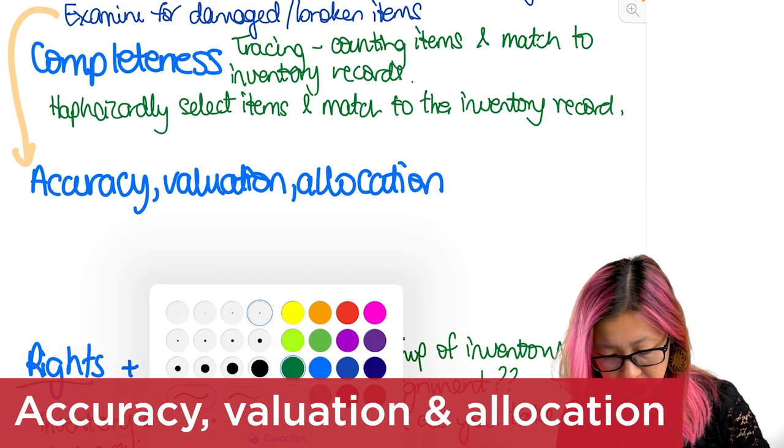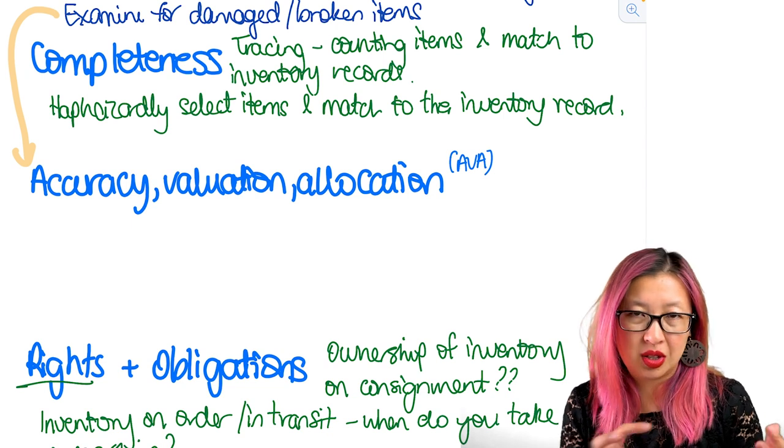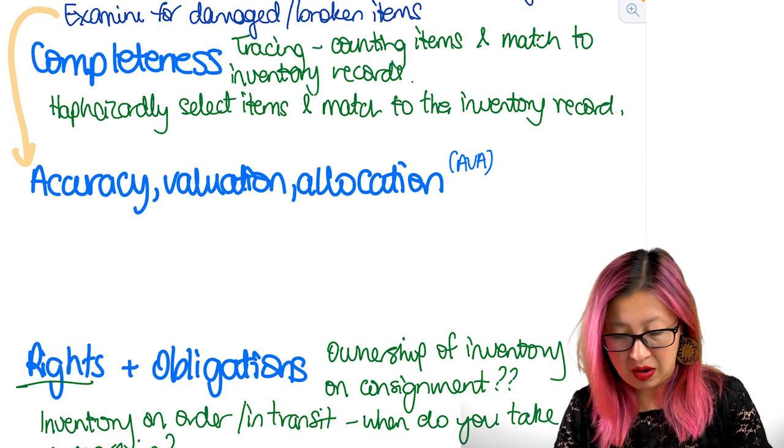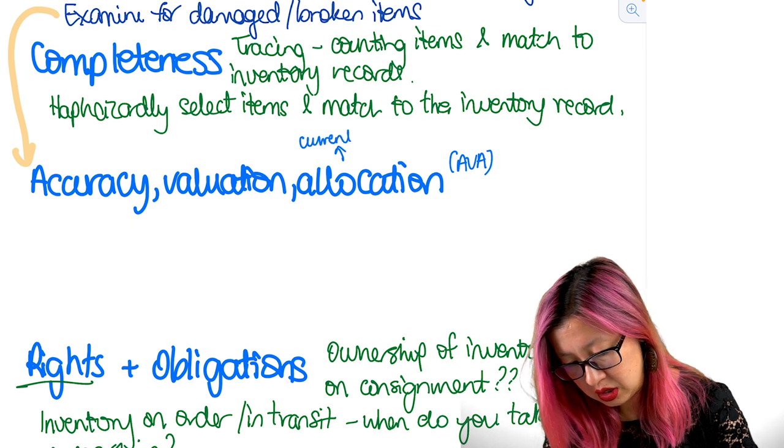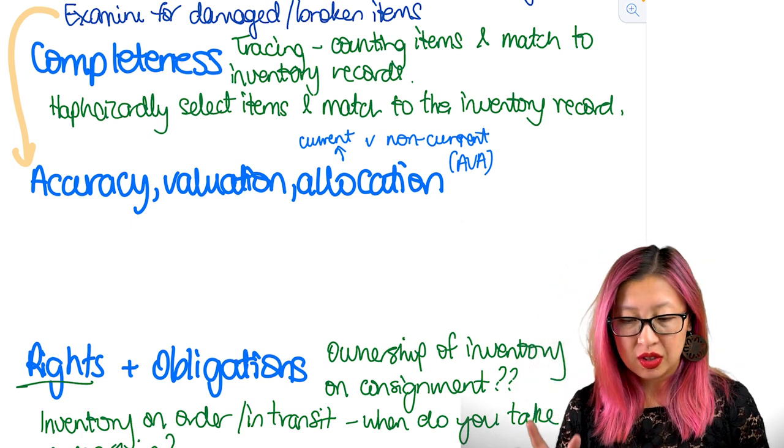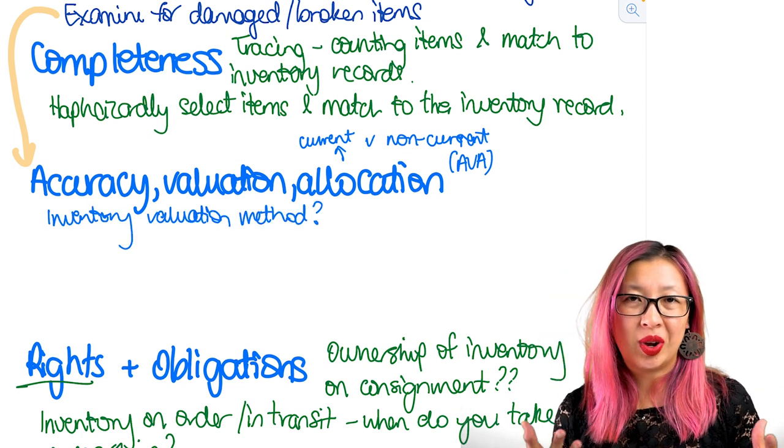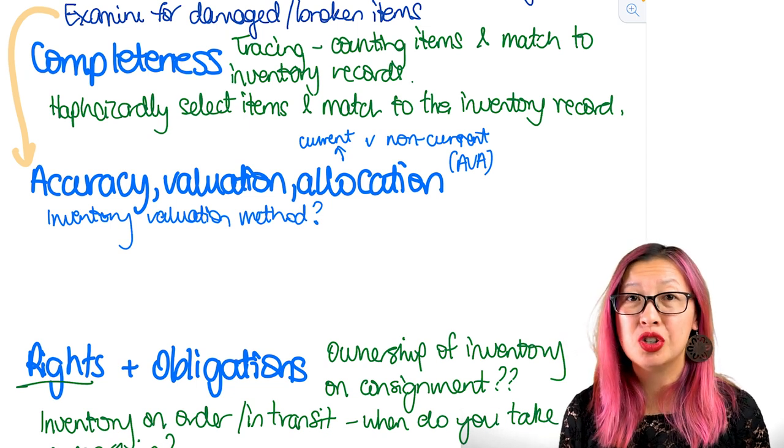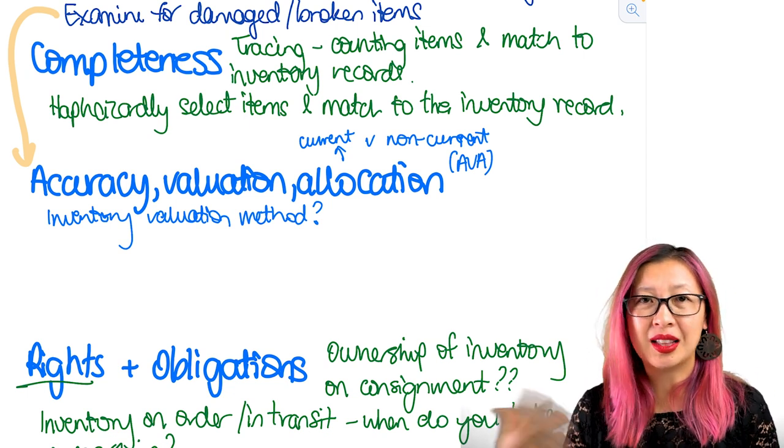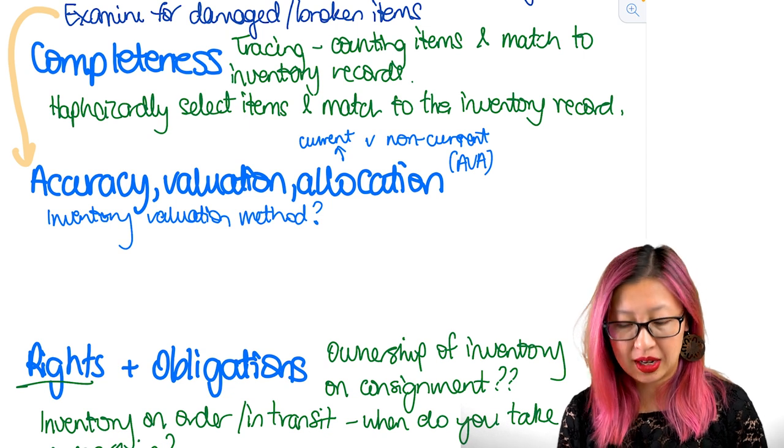So let's go back up now to accuracy, valuation, and allocation. And so AVA as it often is abbreviated to is accuracy is the costing of the individual product, valuation is the value of the entire account, and allocation is going to be do we have any non-current inventory. So allocation is going to be current versus non-current. In terms of valuing inventory typically the first thing that we need to think about is the inventory valuation method. So you need to check whether the inventory method that's being used is acceptable within your jurisdiction. For example FIFO, weighted average, LIFO, so you have to pick out which one, are they using a method that's not appropriate or that is an appropriate method.